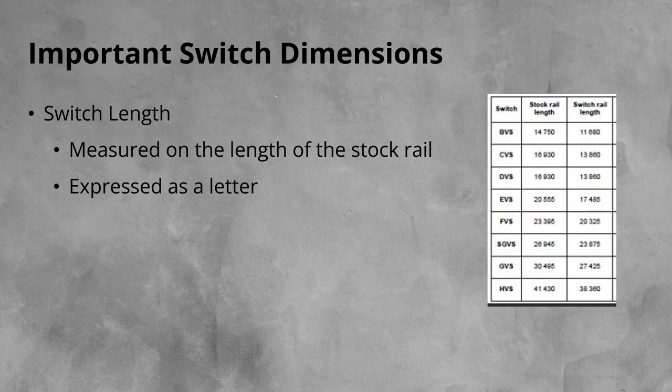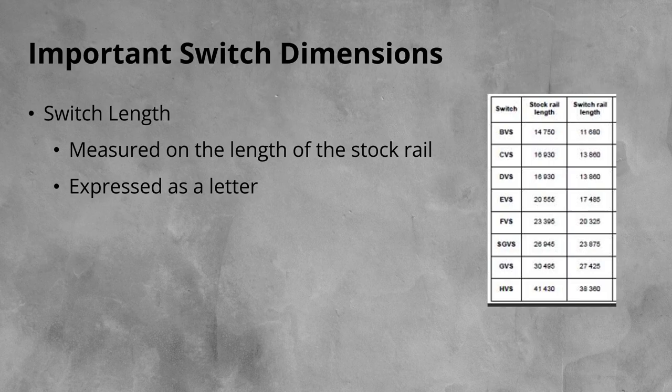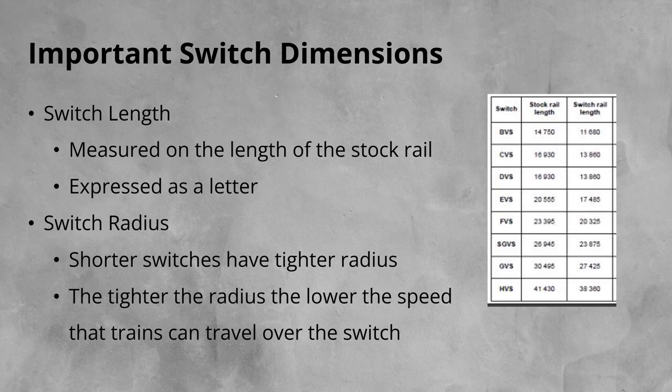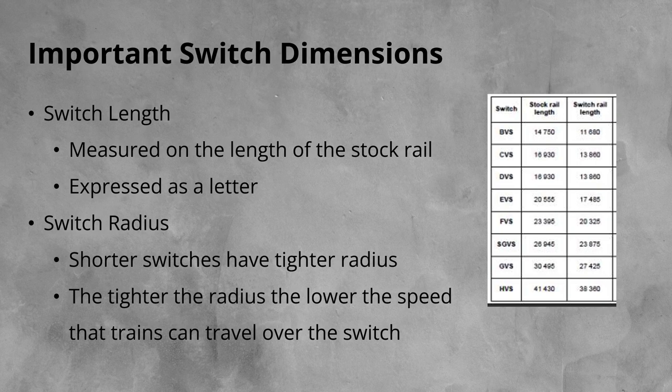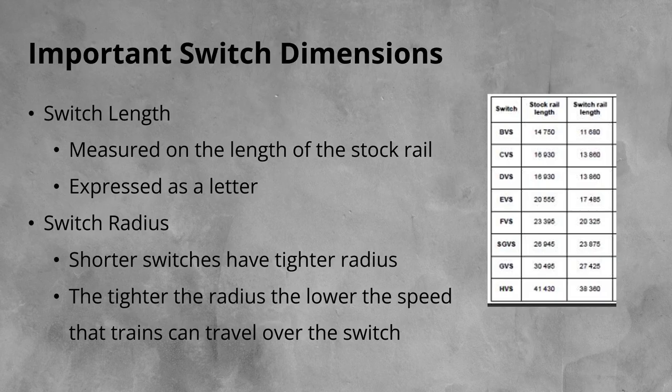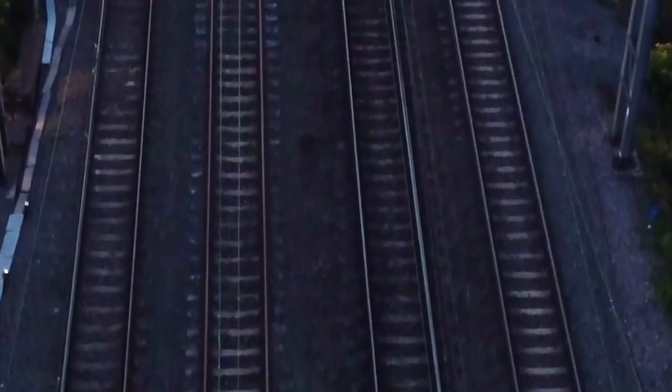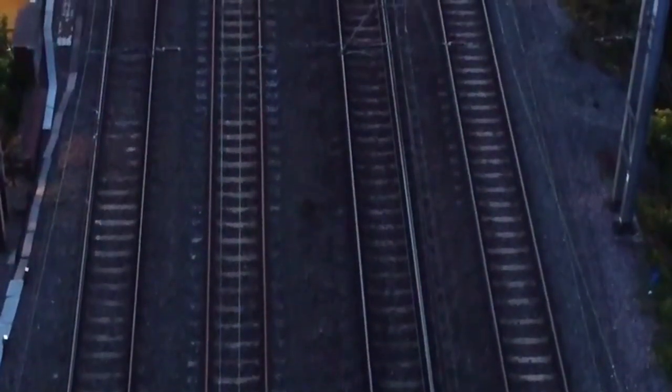It is expressed as a letter, with the shortest switch denoted as an A switch, right up to the longest switches, H switches. The shorter the switch the tighter the radius the turnout has, although the exact radius depends on the overall track design on site. As short switches have tighter radius, the speed at which a train is allowed to traverse the turnout route is low. H switches, with their longer lengths and large turnout radii, are suitable for the highest speeds. Switch length and radius are key drivers in the overall layout and footprint of railway junctions.